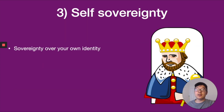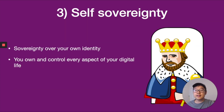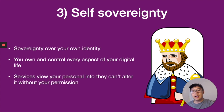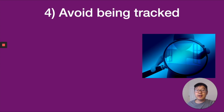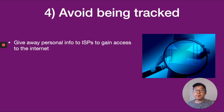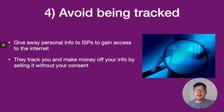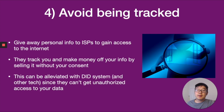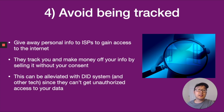Number three is self-sovereignty of your identity — you own and control every aspect of your digital life. Services can view your personal info, but they can't alter it without your permission. Number four has to do with privacy and tracking. Sometimes we give away personal info to service providers to gain access to the internet or their services, and they track you and make money off you by selling your data without your consent. This can be alleviated with DID systems in conjunction with other technology like VPNs, so that they can't get unauthorized access to your data.